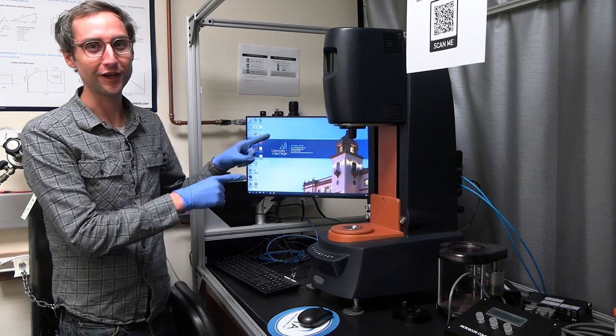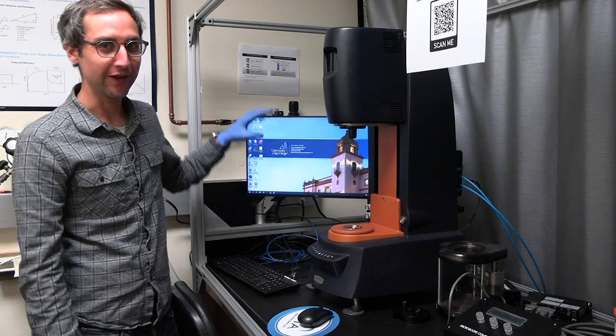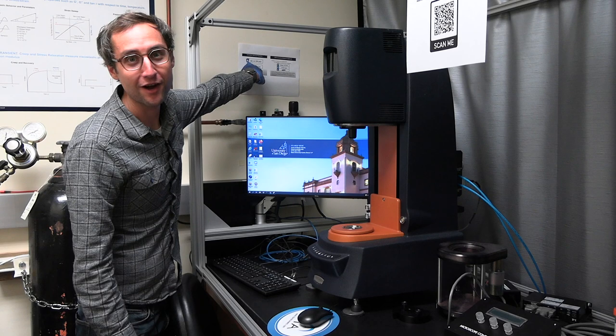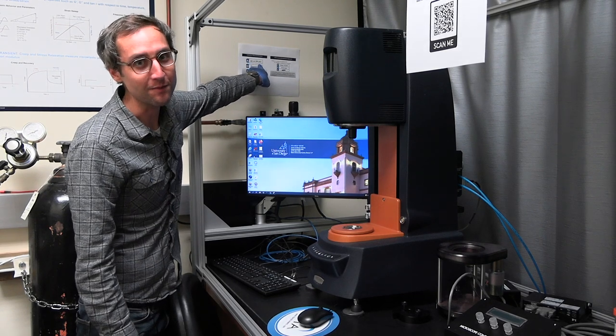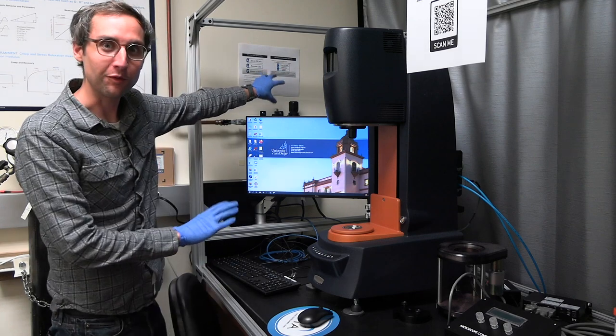Alright, so we'll go over how to use the rheometer here. When you first come down, the first thing to check is what's on this piece of paper here. First check that the air pressure is at 30 psi. That's on this gauge. If it's not, don't operate the rheometer.